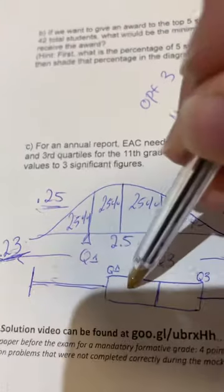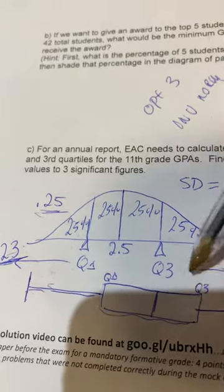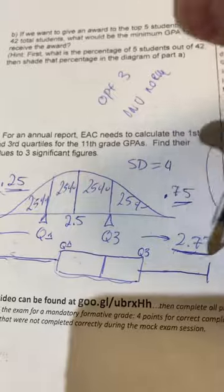We should draw our box and whiskers diagram which represents both quartiles, and these are the results we're looking for.